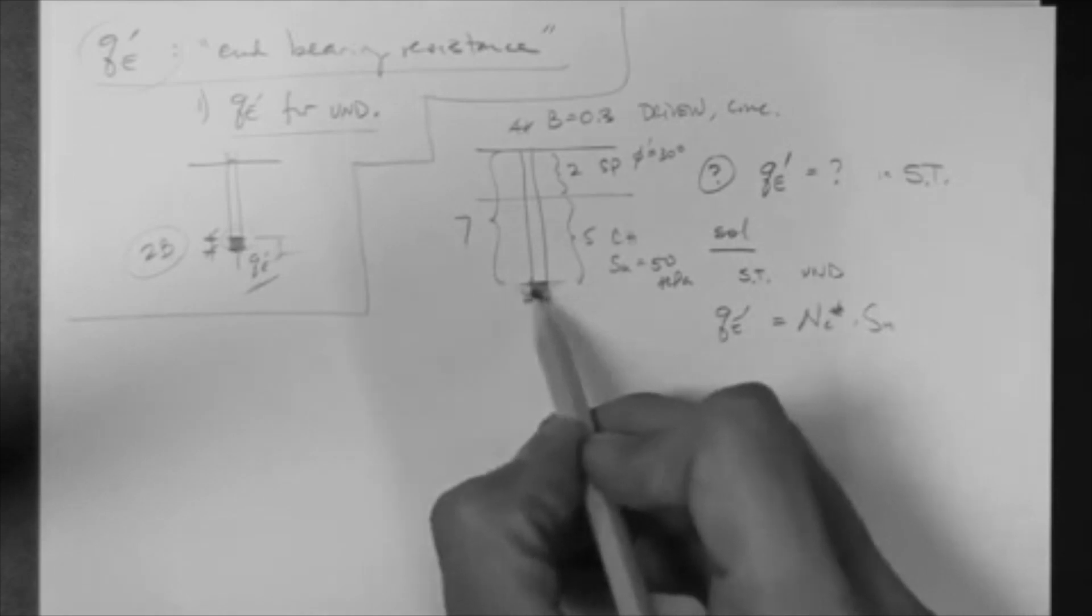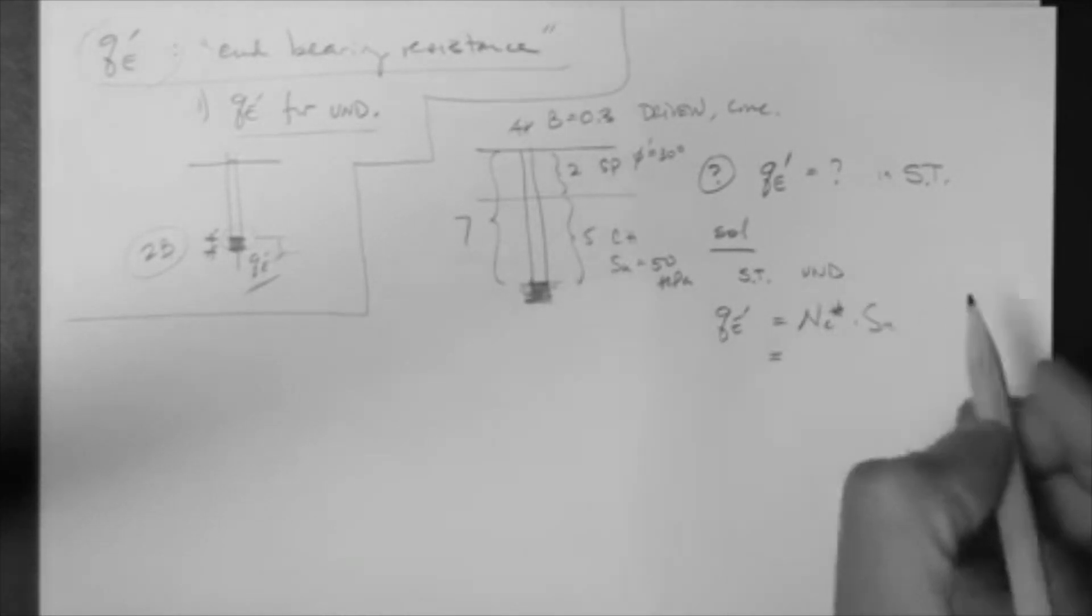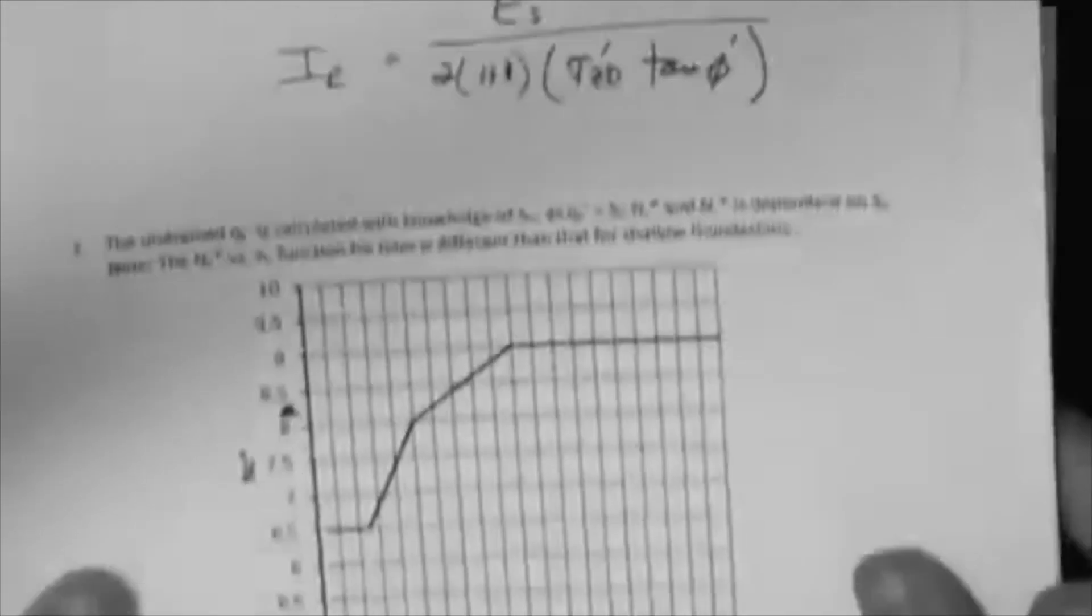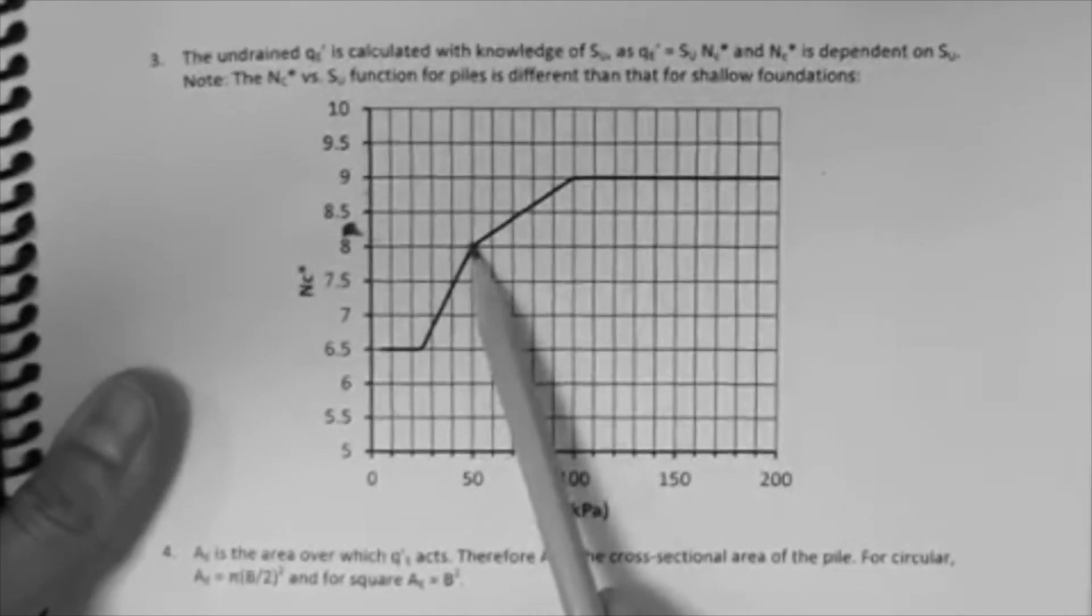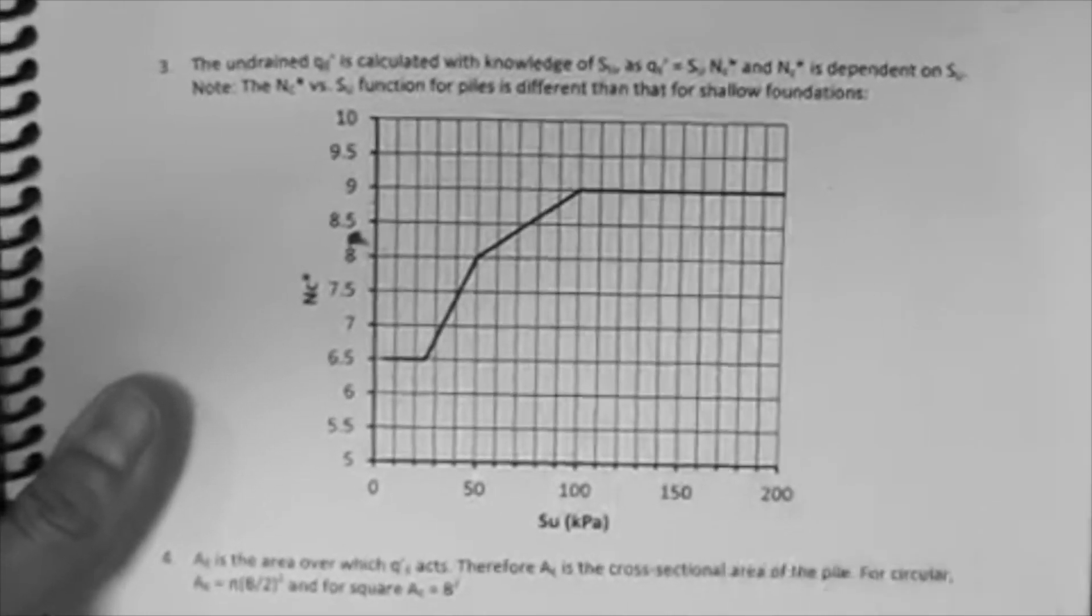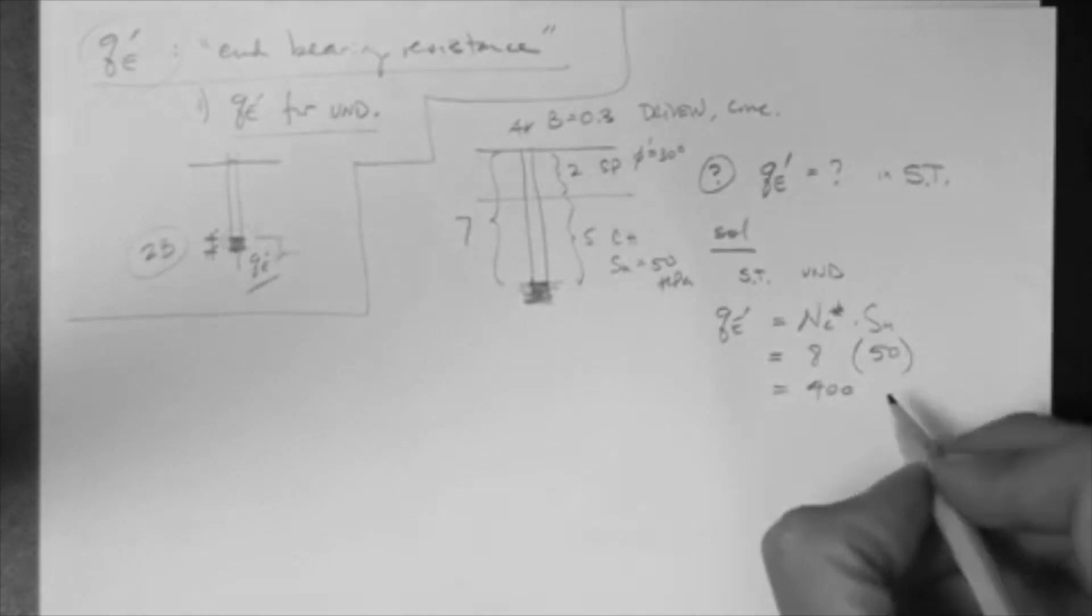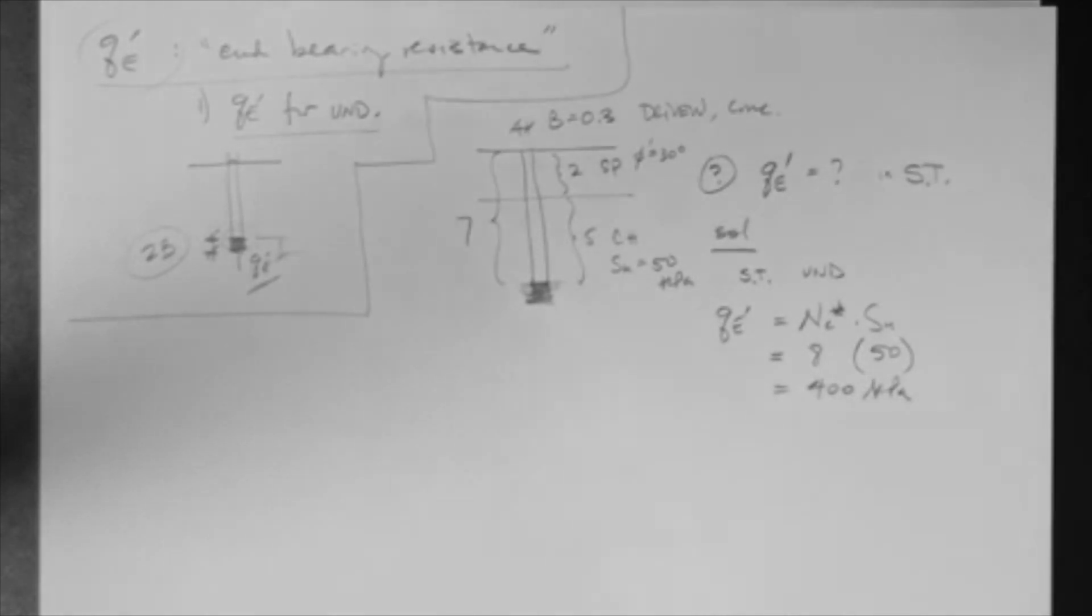In the short term, it's undrained, because this is a clay. And, therefore, we get Nc* times Su. Su is 50, and what's Nc*? Well, if we go to the reader, 50, Nc* is 8. So, this is 400 kPa. That's the answer. Very simple.